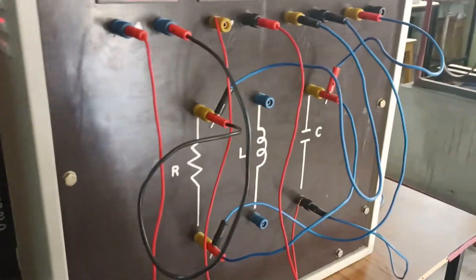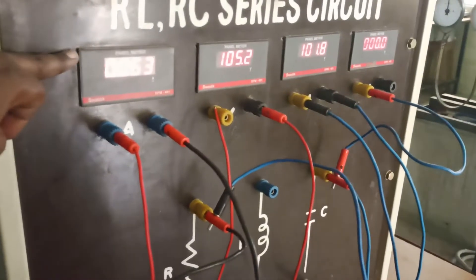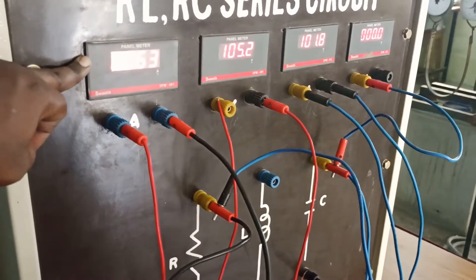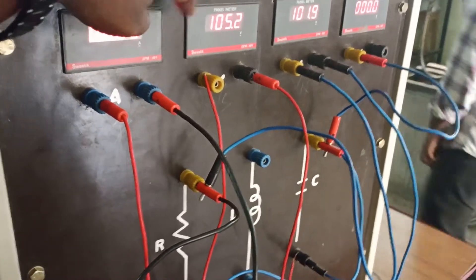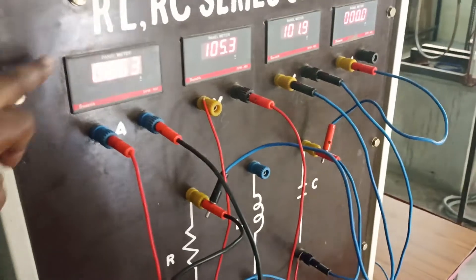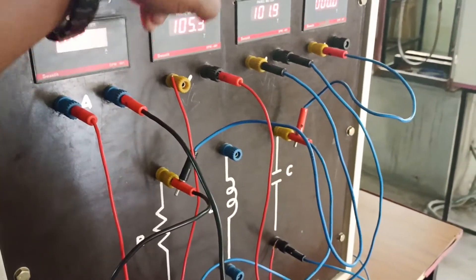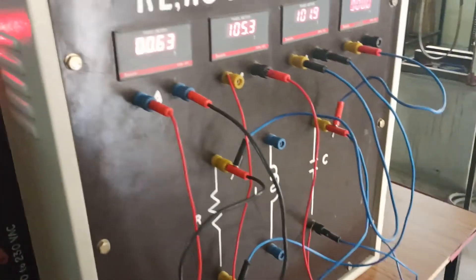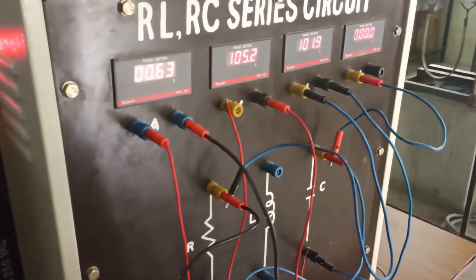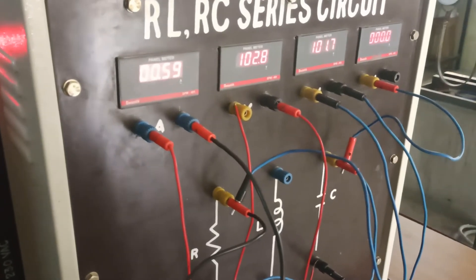Here is the value of current, this is the value of current, this is applied voltage, voltage, current, and voltage across resistor and voltage across inductor. This is how you need to take the readings. Thank you.